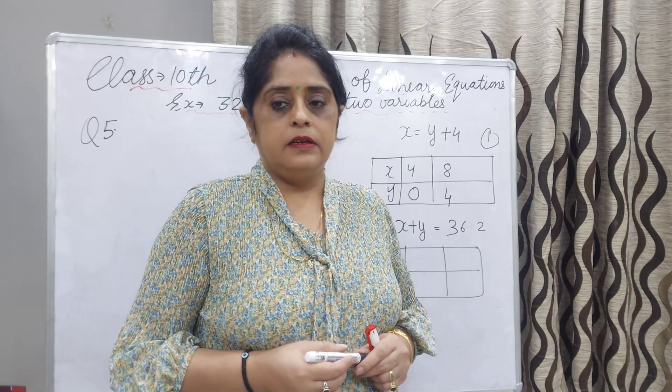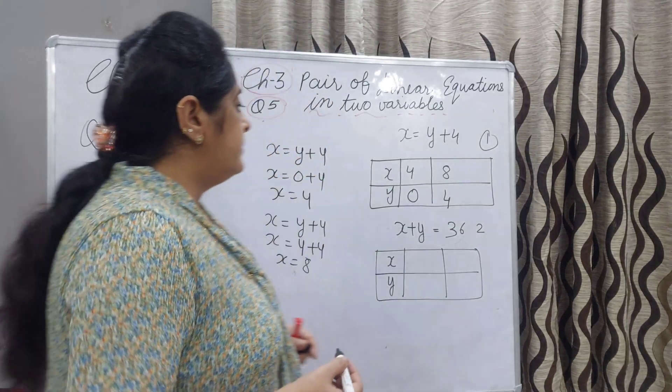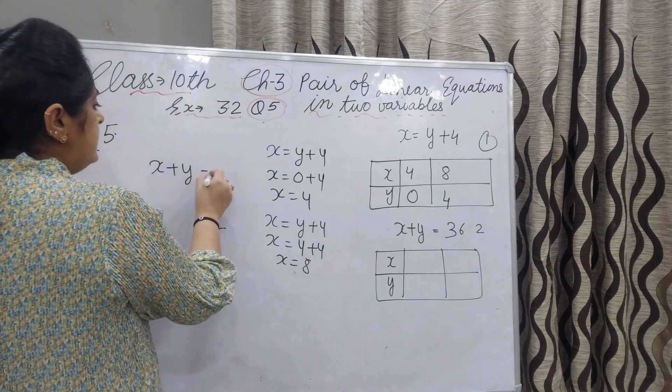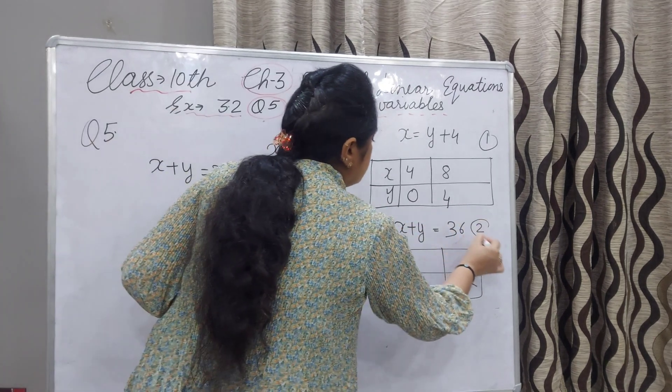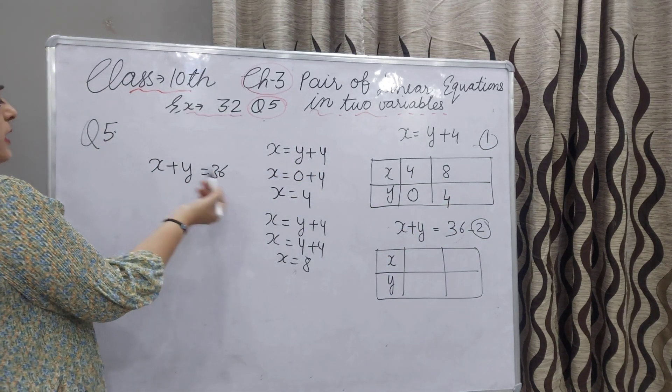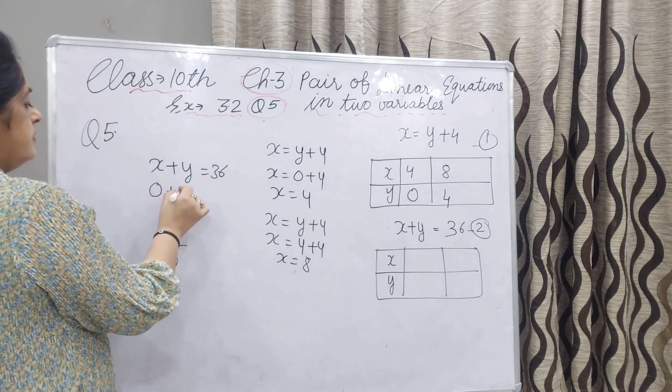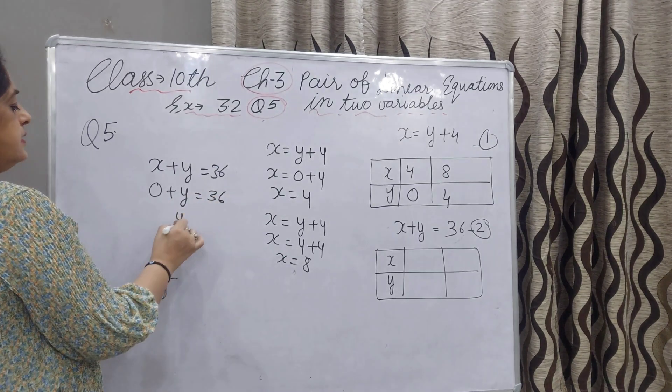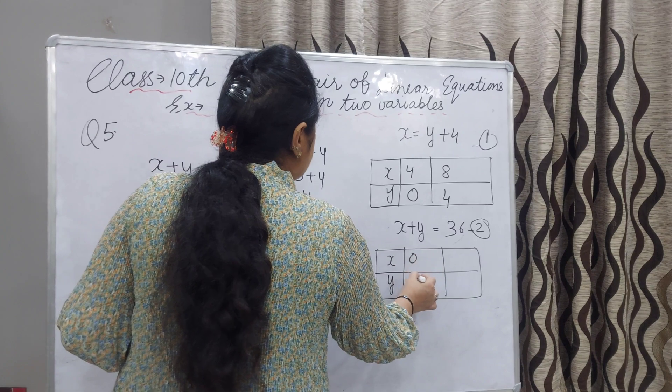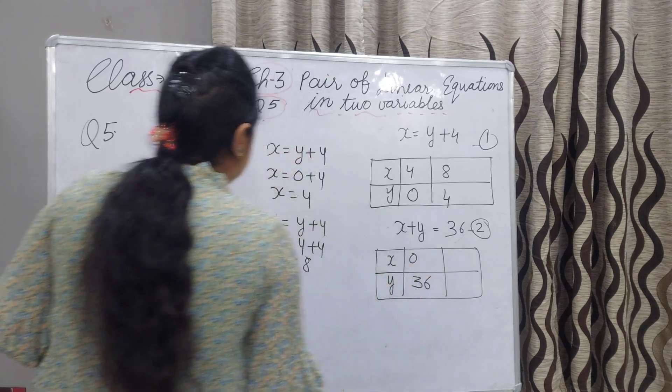Now we will put another table with the values. x plus y is 36. It is the second equation. One time you take x 0, y is coming 36. We have taken x 0, y is coming 36.